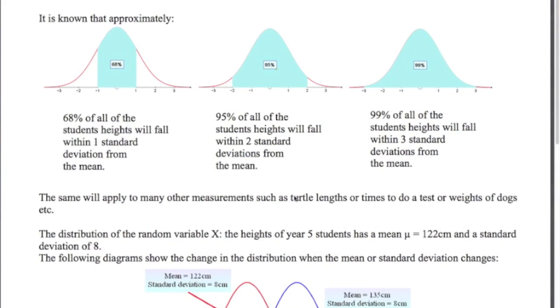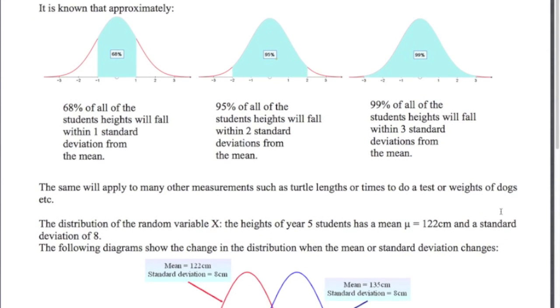If you look at all these normal distributions, we know that about 68% of all the values fall within one standard deviation of the mean, about 95% within two standard deviations, and 99% of all the values will fall within about three standard deviations from the mean. This applies to all kinds of things: turtle lengths, times to do a test, weights of dogs, anything.